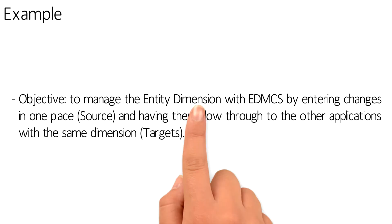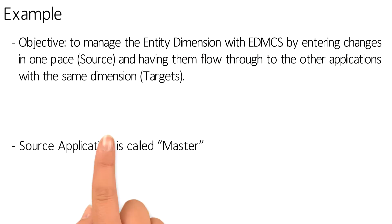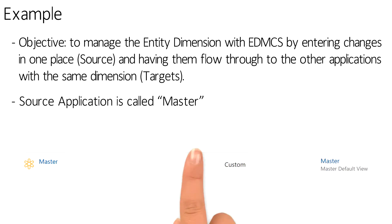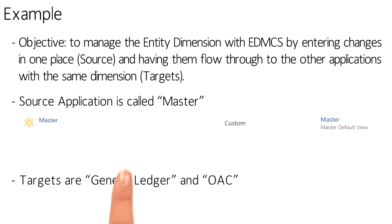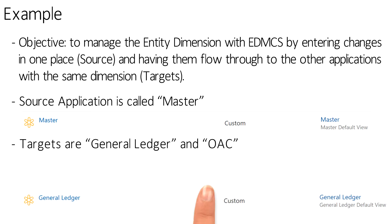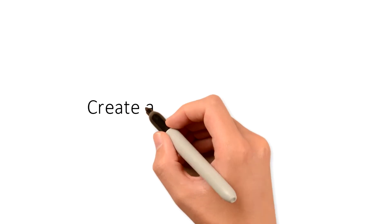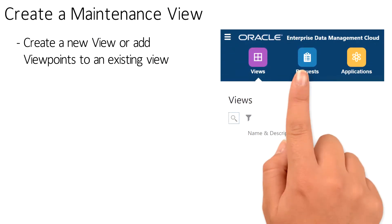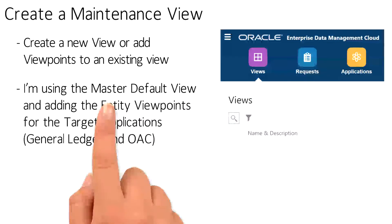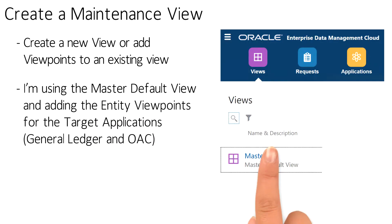In this video, I will show you a very simple example of how to use subscriptions to manage the entity dimension. This dimension will be maintained in a master application and changes will be submitted to two target applications, General Ledger and OAC. First, I'm going to create a maintenance view — for this demonstration, I'll just modify the existing default view for the master application, but I could also create a new view using basically the same steps.